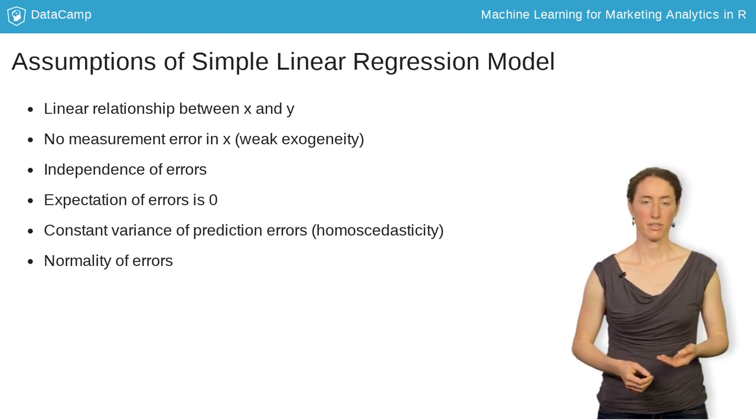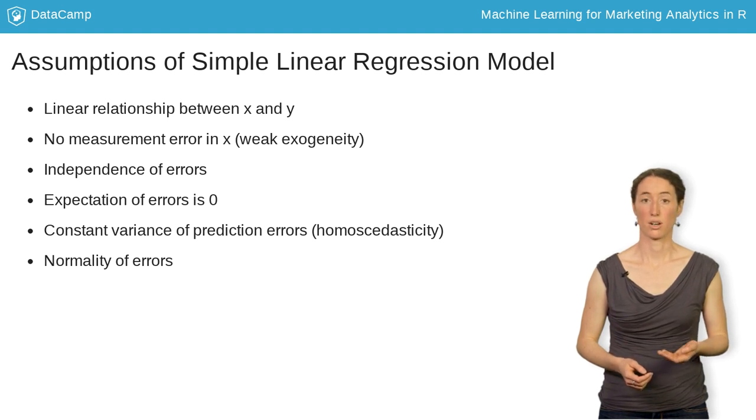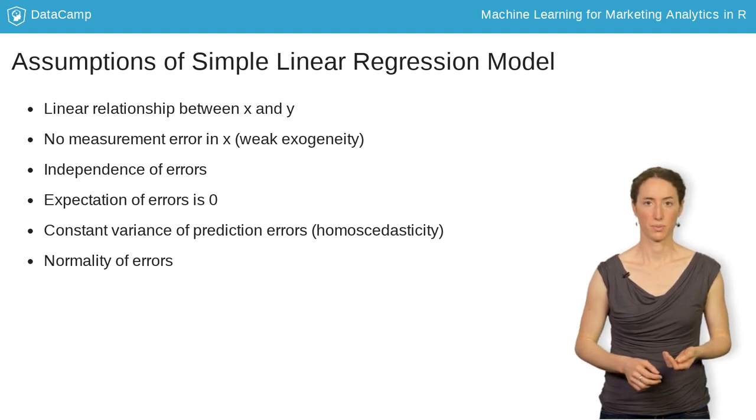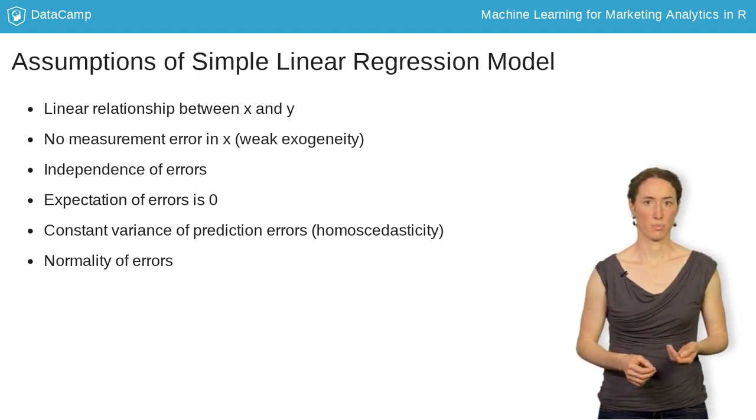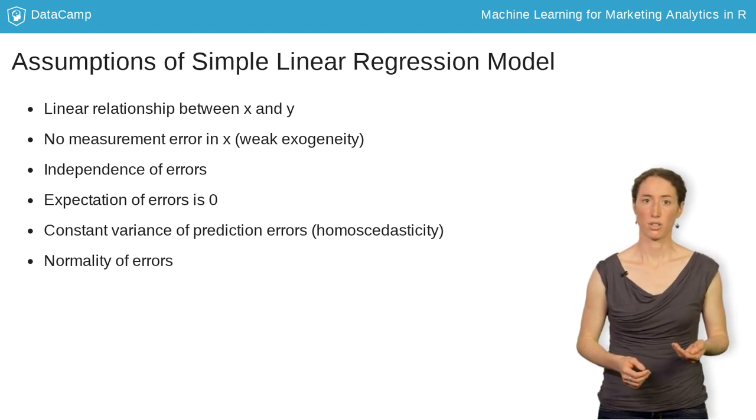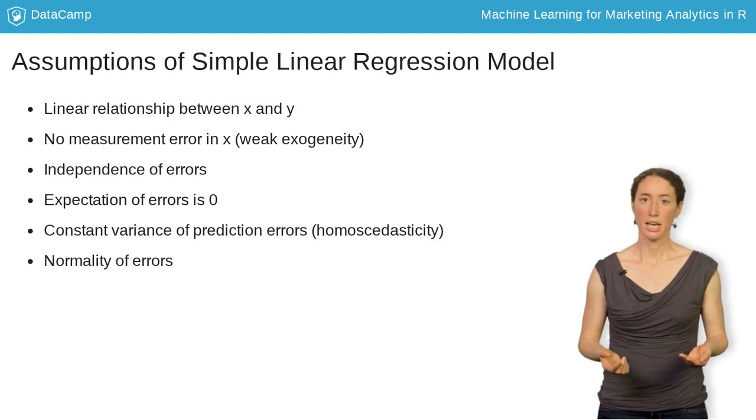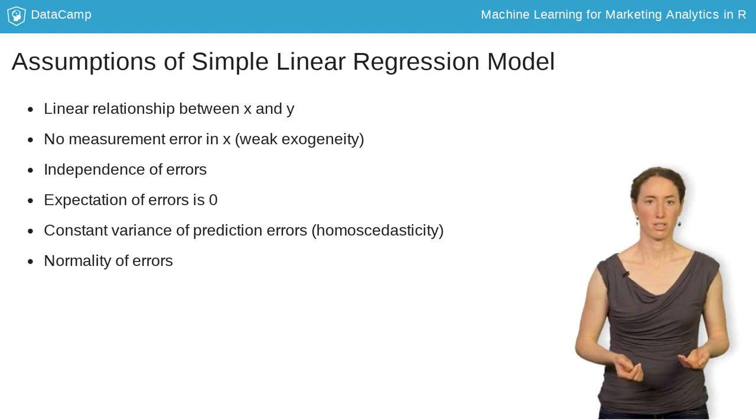When doing statistical significance testing, we also have to assume that the errors are normally distributed. A well-established method to check the violation of these assumptions is a plot of the predicted values against the estimated residuals. This is called a residual plot.